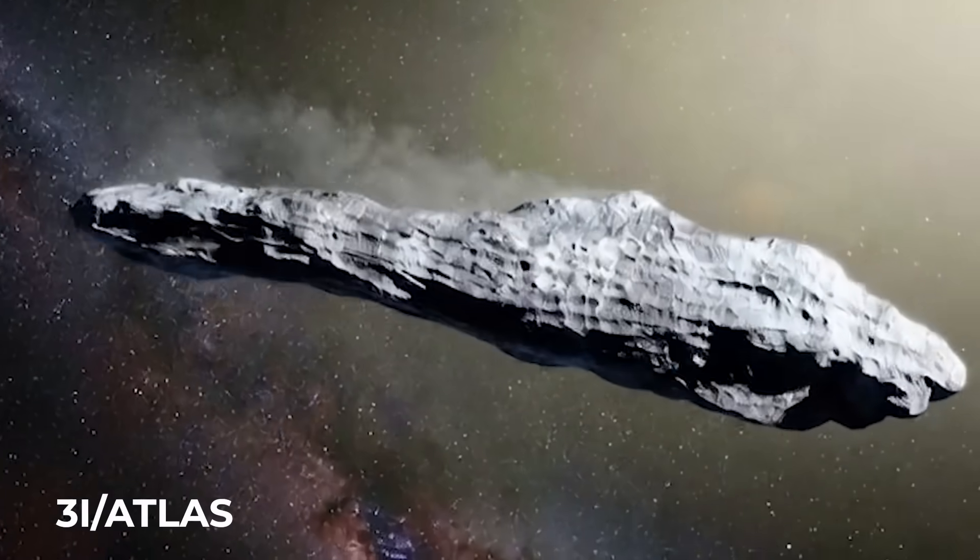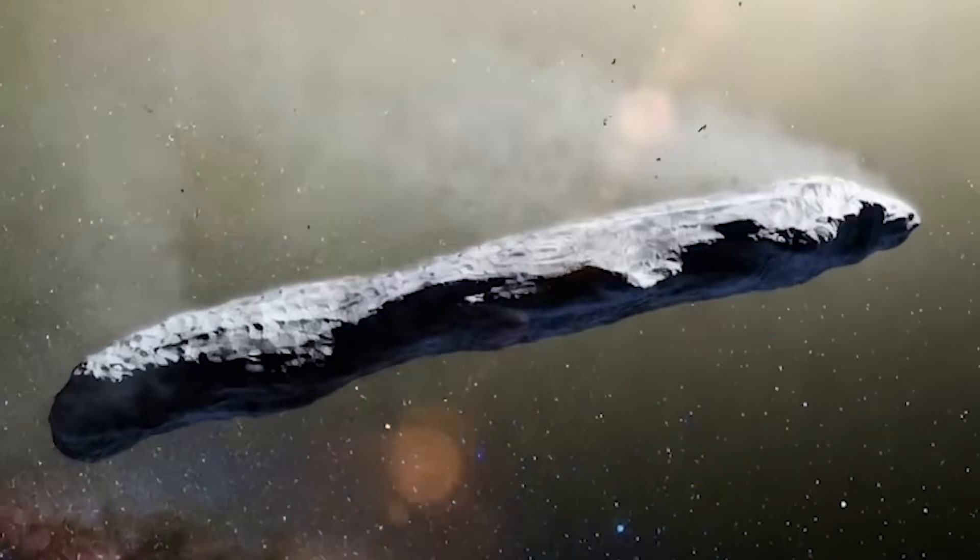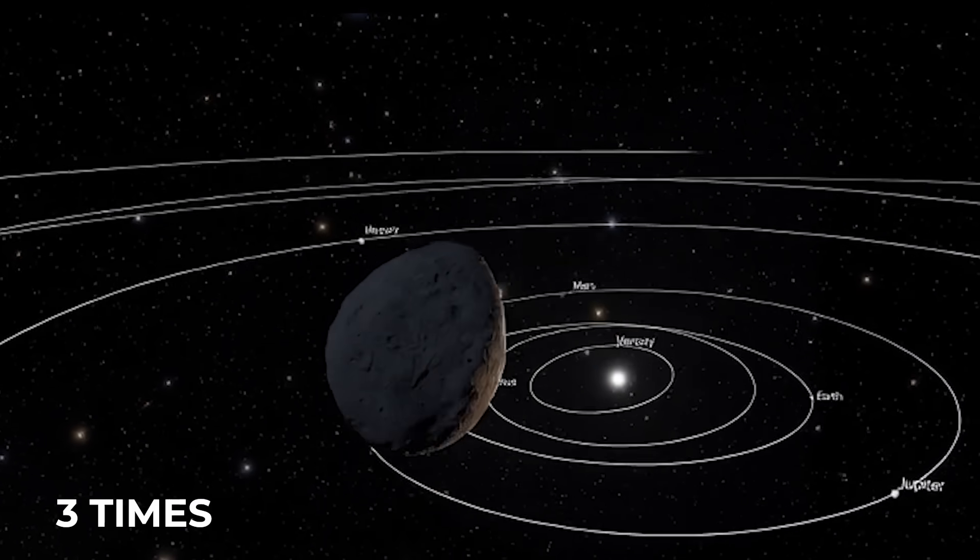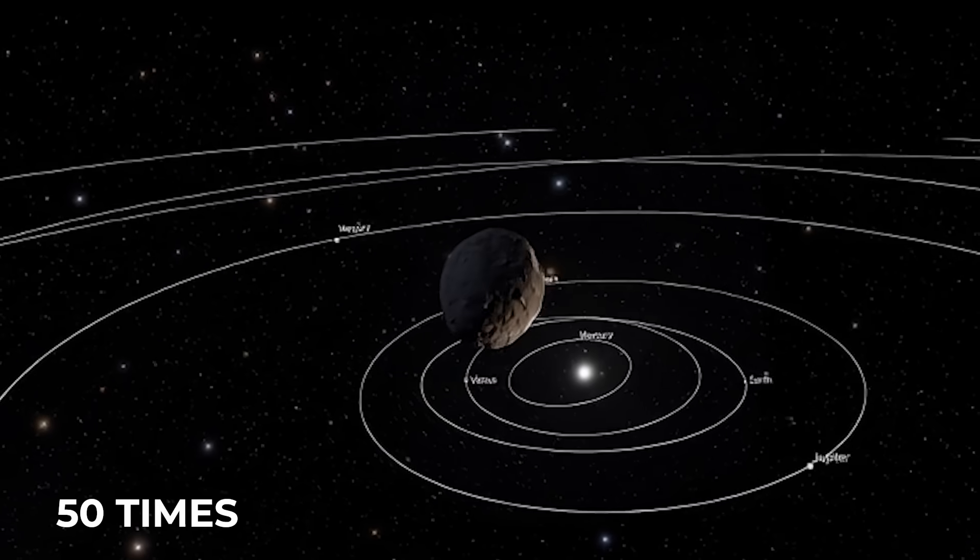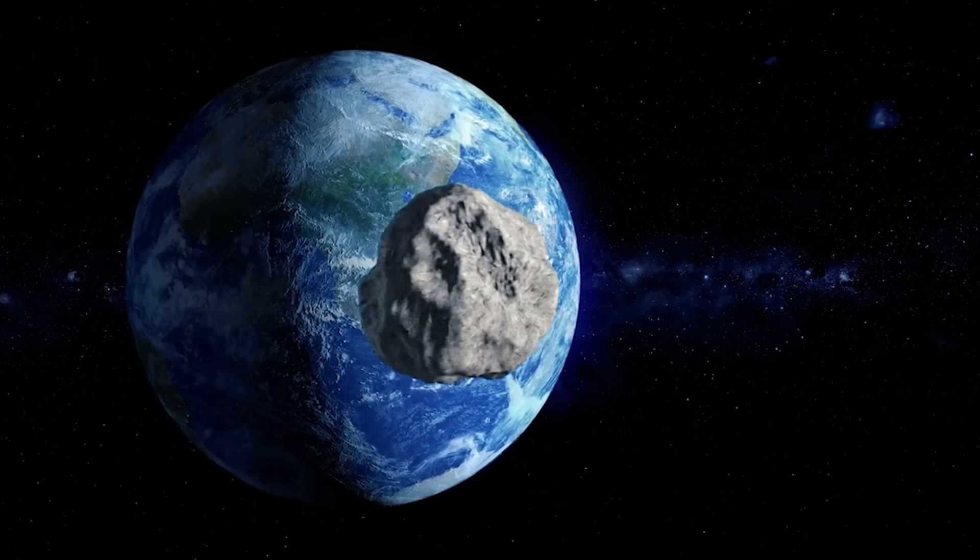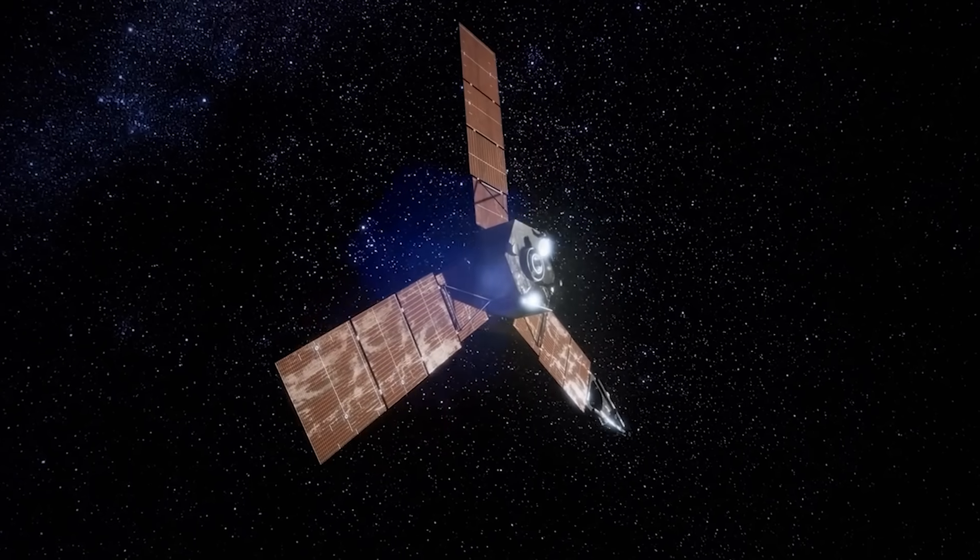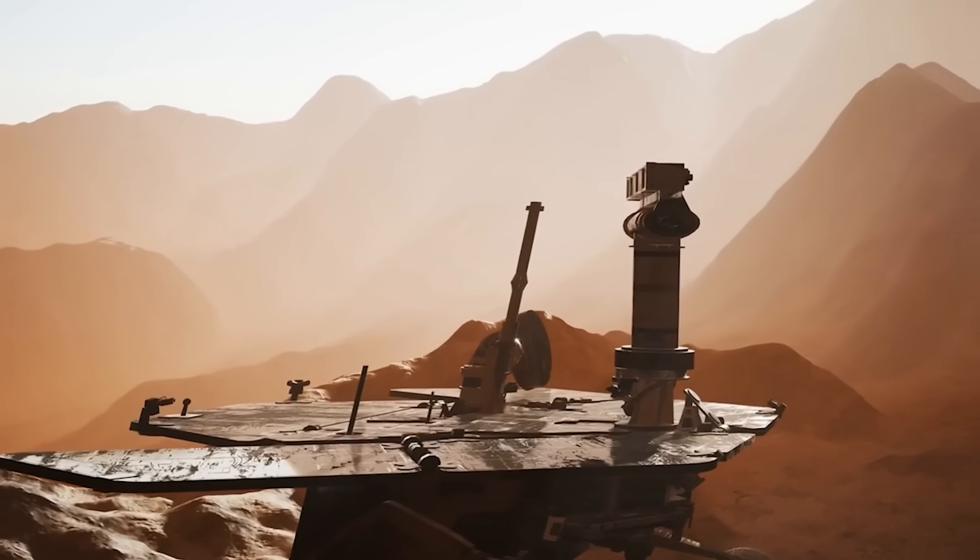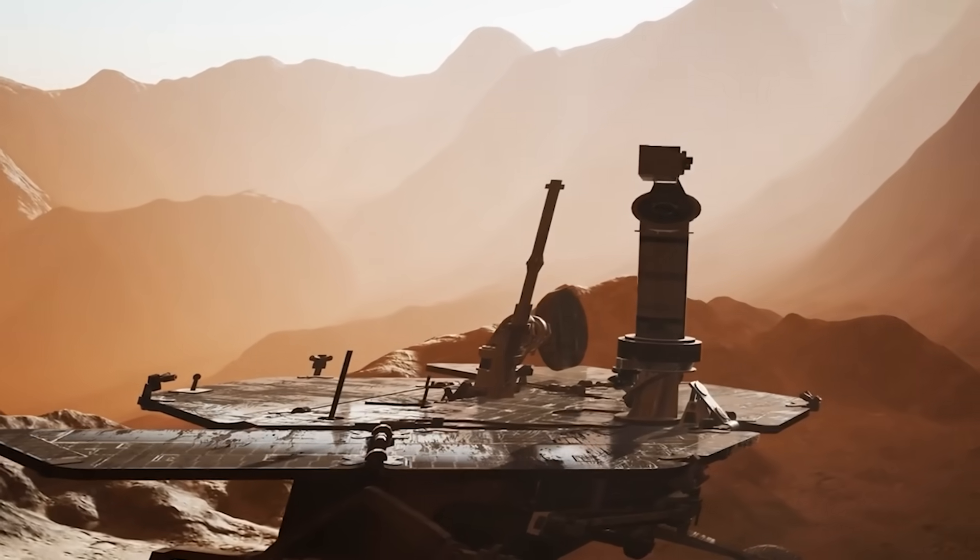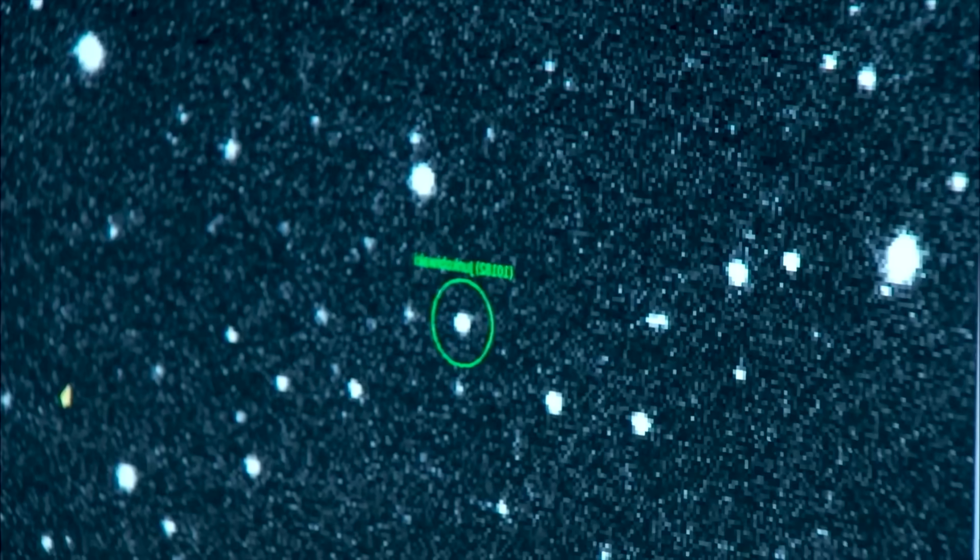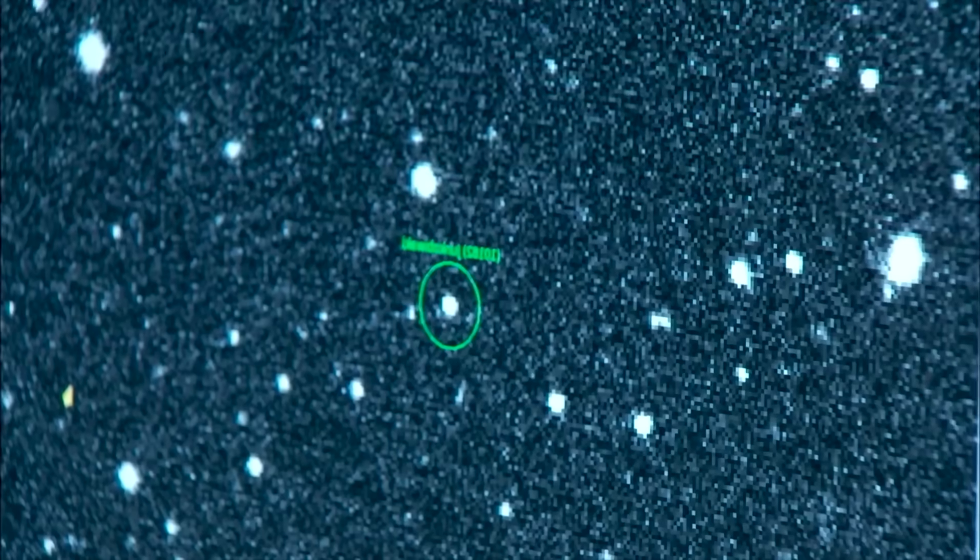Avi Loeb wrote that if 3i/Atlas were artificial, Earth would be defenseless. It travels at more than 221,000 km/h, three times faster than humanity's fastest rocket and 50 times larger than Oumuamua. If it changed course toward Earth, the impact would be devastating. But it could also be an opportunity. If it were technology, it might be the key to advancing human civilization beyond anything imaginable. NASA and ESA keep tracking it. They state clearly: it is an interstellar rock, no threat, only mystery.